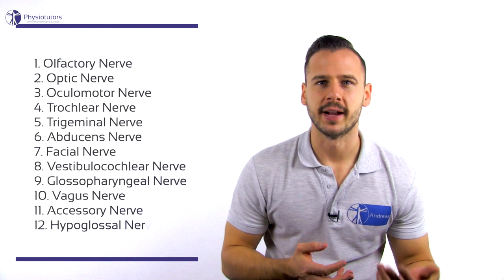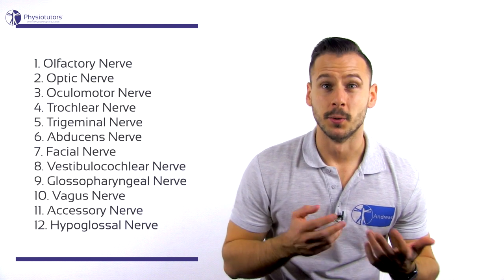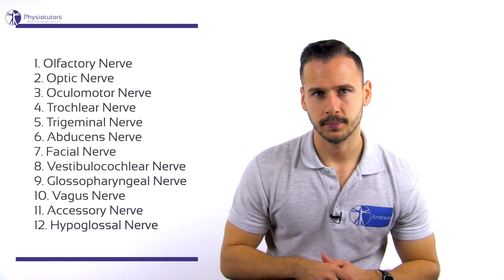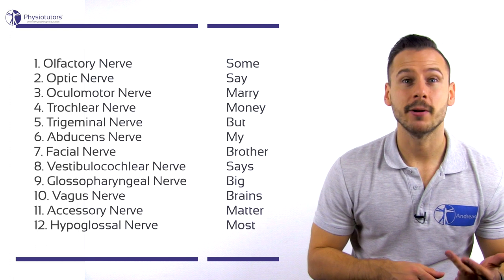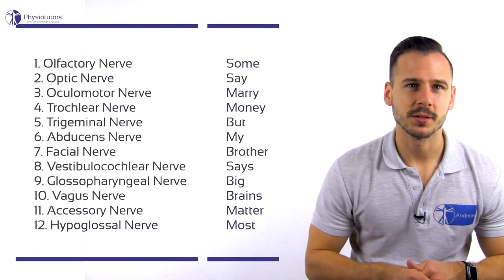So I have listed the 12 cranial nerves in chronological order here on the left. The mnemonic that can help you in remembering their function is the following. Some say marry money, but my brother says big brains matter most.